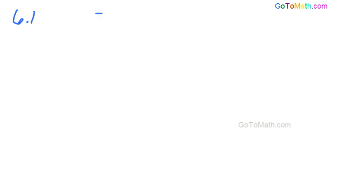So we have an equation, 5t over t plus 5 equals 2 minus 25 over t plus 5.